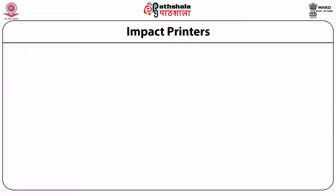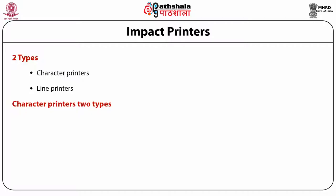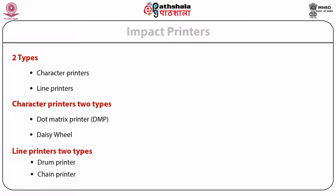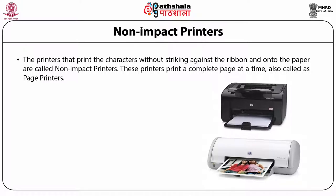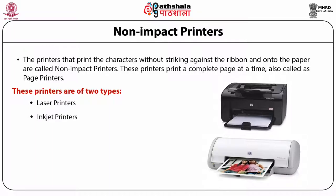For the impact printer, there are two categories: character printers and line printers. Character printers may be again categorized as dot matrix printers or DMP and daisy wheel printers. Line printers are further classified as drum printer and chain printer. For non-impact printers, these are printers that print the characters without striking against the ribbon or onto the paper. These printers print a complete page at a time and are also called page printers. Basically laser printers and inkjet printers belong to this category.